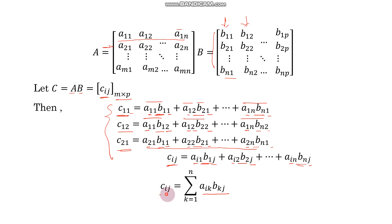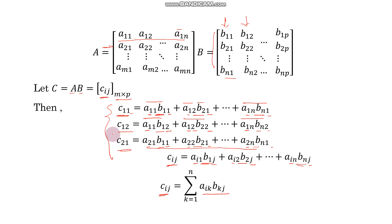So whenever you have to write Cij: the first subscript of A is i, the last subscript of B is j, and the middle index K moves from 1 to N. This expression is very important, and you should try to derive it yourself because we can prove many theorems using it.